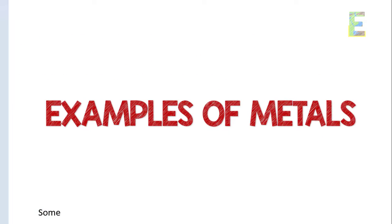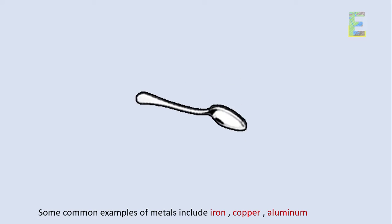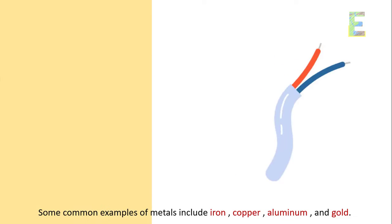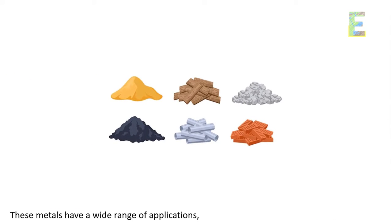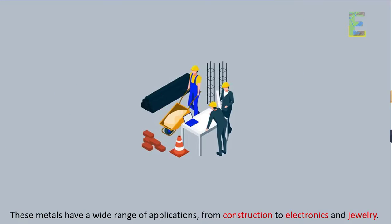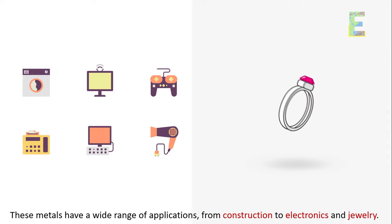Examples of metals. Some common examples of metals include iron, copper, aluminum, and gold. These metals have a wide range of applications, from construction to electronics and jewelry.